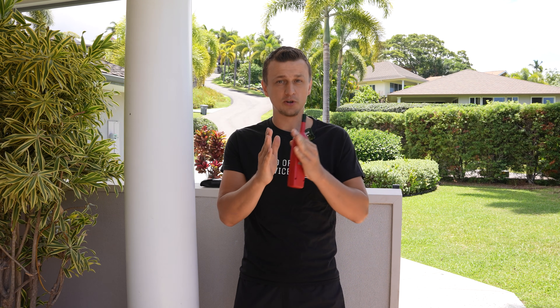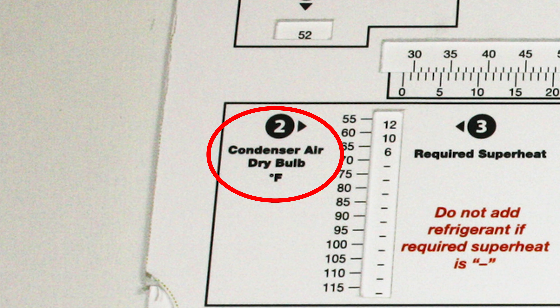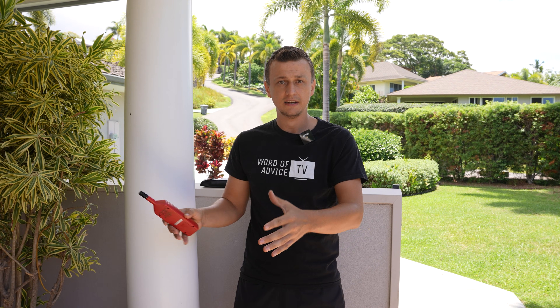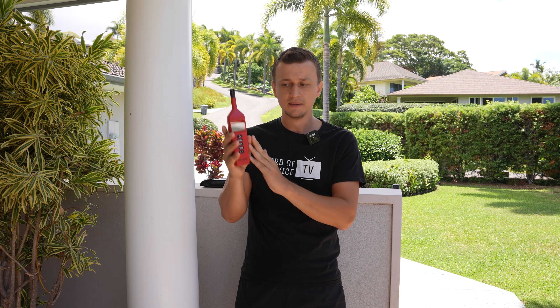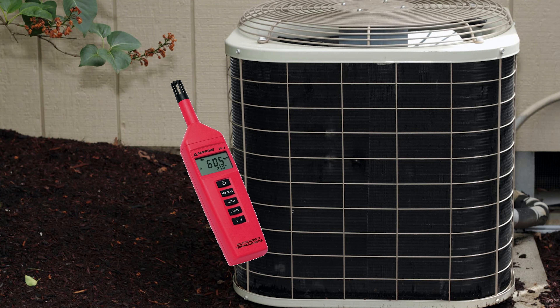If you're adding refrigerant to an air conditioner and it's asking you for the condenser dry bulb temperature, all it's asking for is the ambient temperature around the condenser unit outside. You would take a thermometer — I use a psychrometer usually — and put it on the side of the condenser where it's sucking air in, measuring the temperature going into the unit. Preferably on a shady side so the sun doesn't affect the temperature.